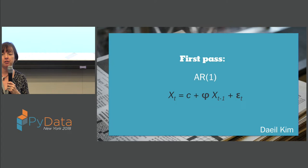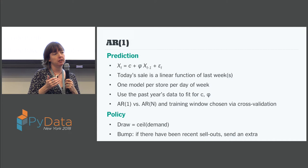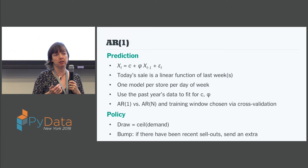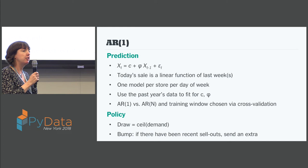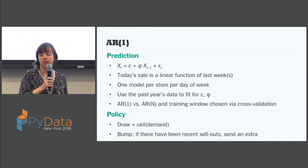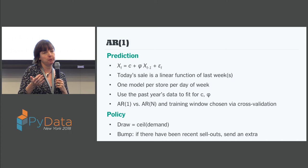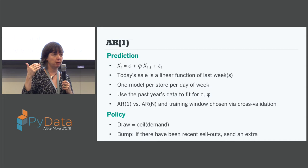For the policy function — given the demand that the AR model predicts, how many should we actually send — we're just using the ceiling of the demand so that we know we're always sending at least as many newspapers as we think we'll sell. There's also this factor we call the bump: if there have been recent sellouts in the data, just send an extra on top of what we would otherwise send. This is a kind of manual, brute-force attempt at addressing the fact that our data are actually censored — because if there are sellouts, we don't know what the demand actually was; all we know is that demand was at least as many as we delivered. So by gradually bumping up the number we're delivering in case of sellouts, we're slowly reducing that censoring in the data set.